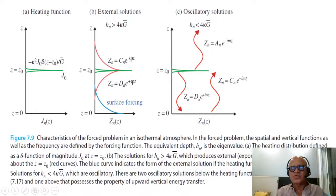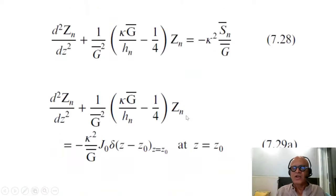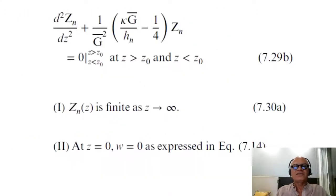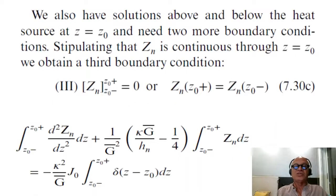They are oscillatory, so there are two oscillatory solutions below the heating function, satisfying the lower boundary conditions. To satisfy the lower boundary condition, which looks like this complicated function here, you need two waves. And above that, to satisfy the upper boundary condition, you only need one wave.